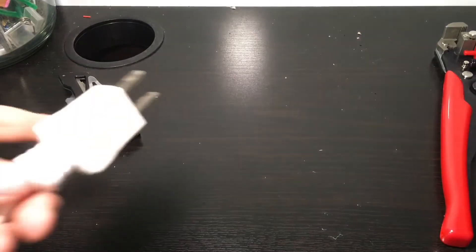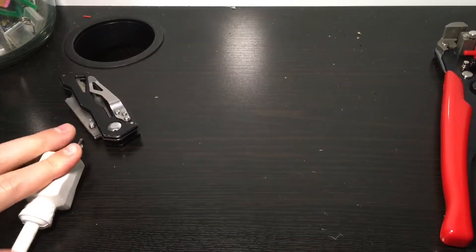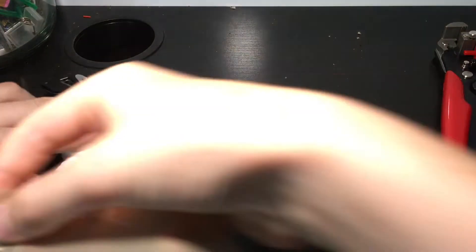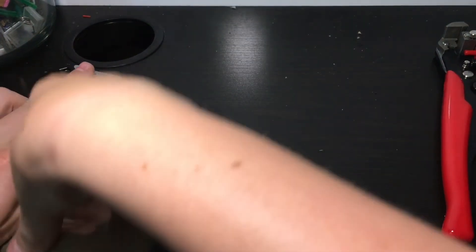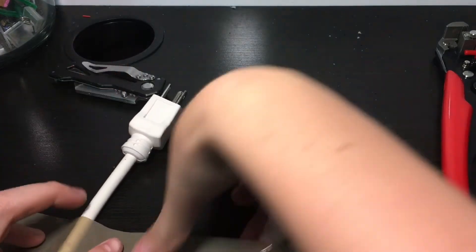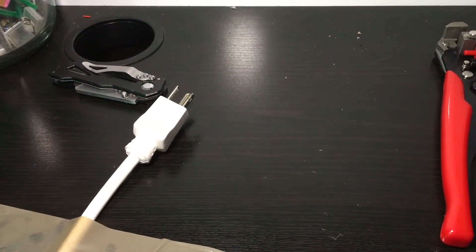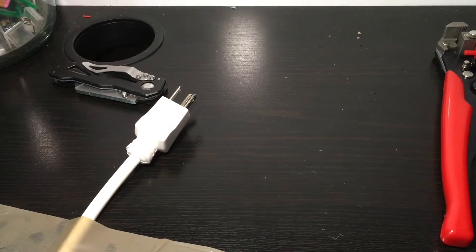You're going to grab your extension cord and tape the plug end down on the table or desk or whatever you're working on. You're going to tape it down so that it doesn't get accidentally plugged in so that you're not going to get electrocuted whenever you're working on these plugs.